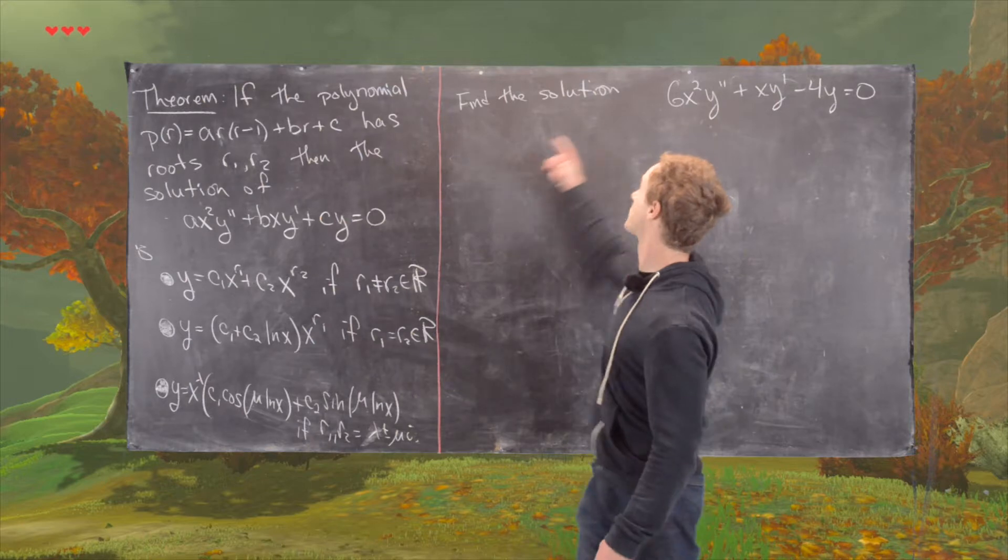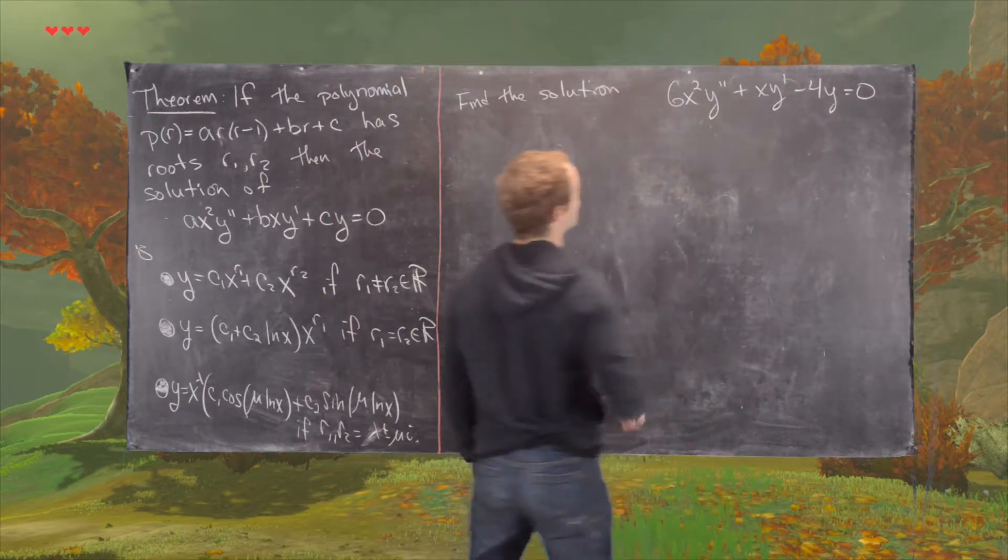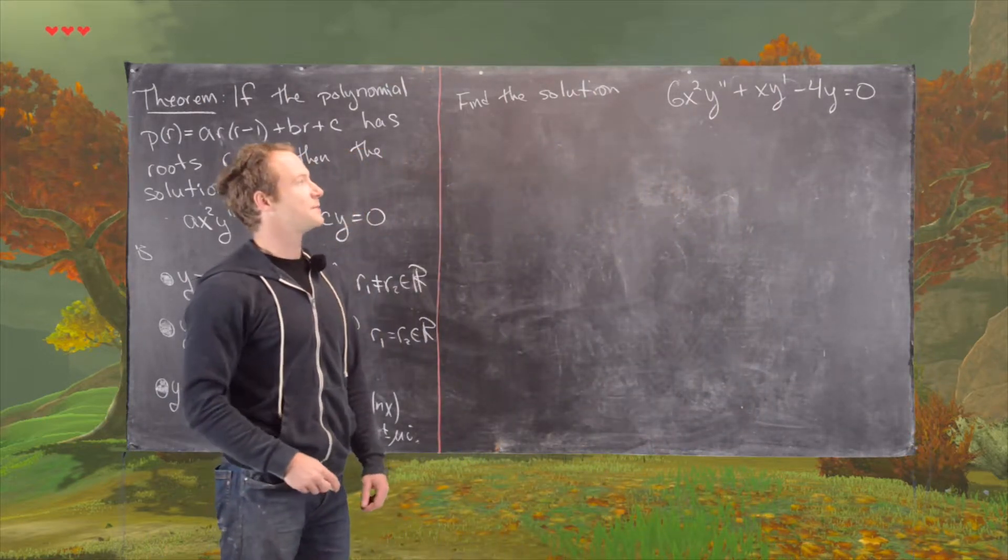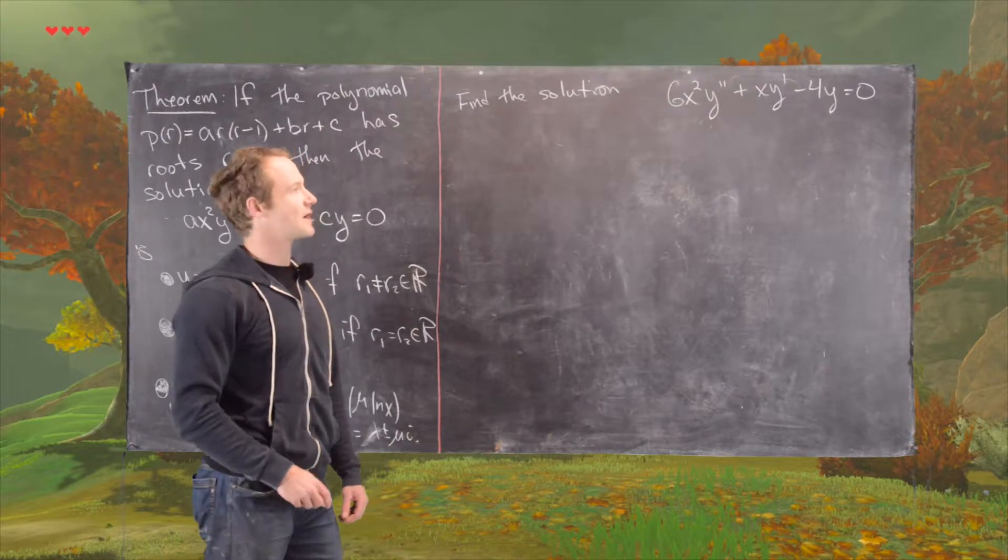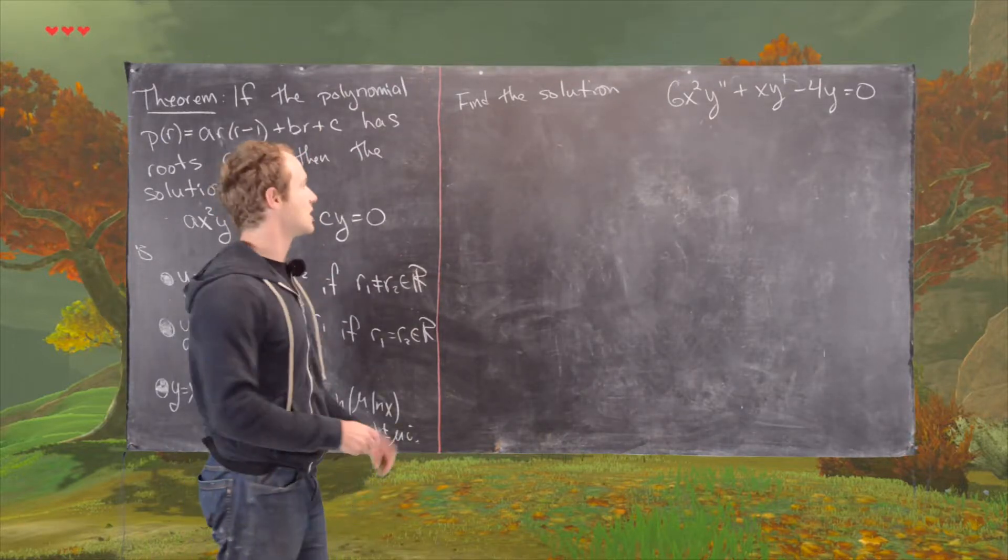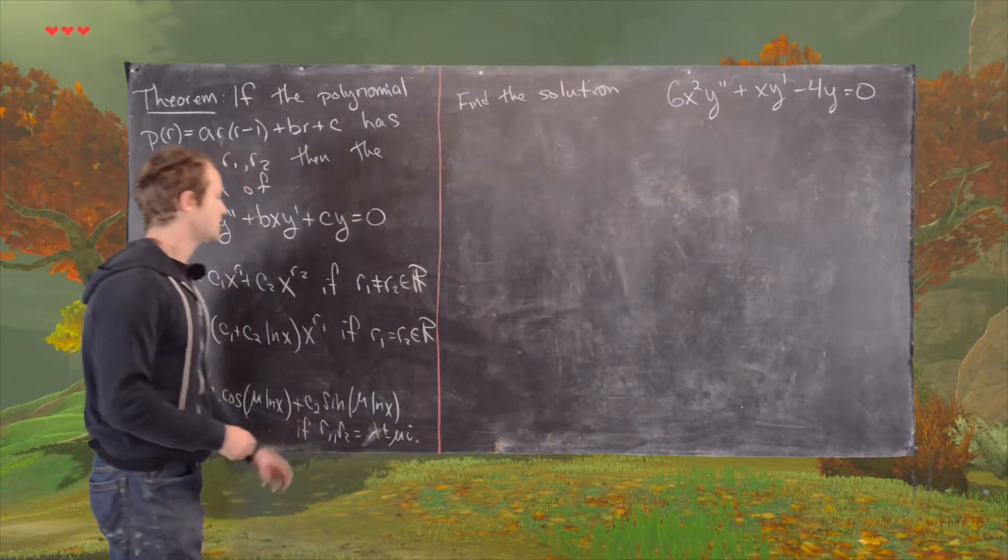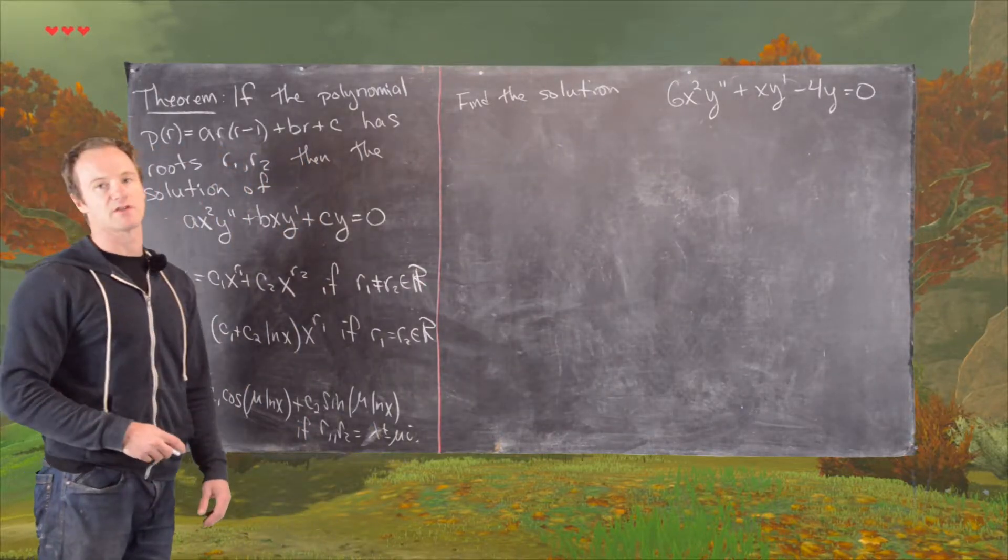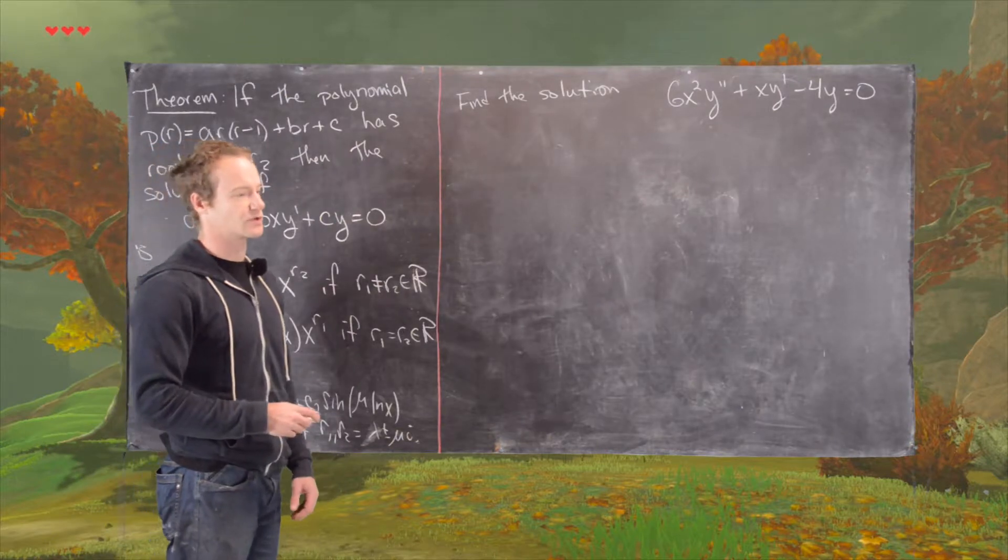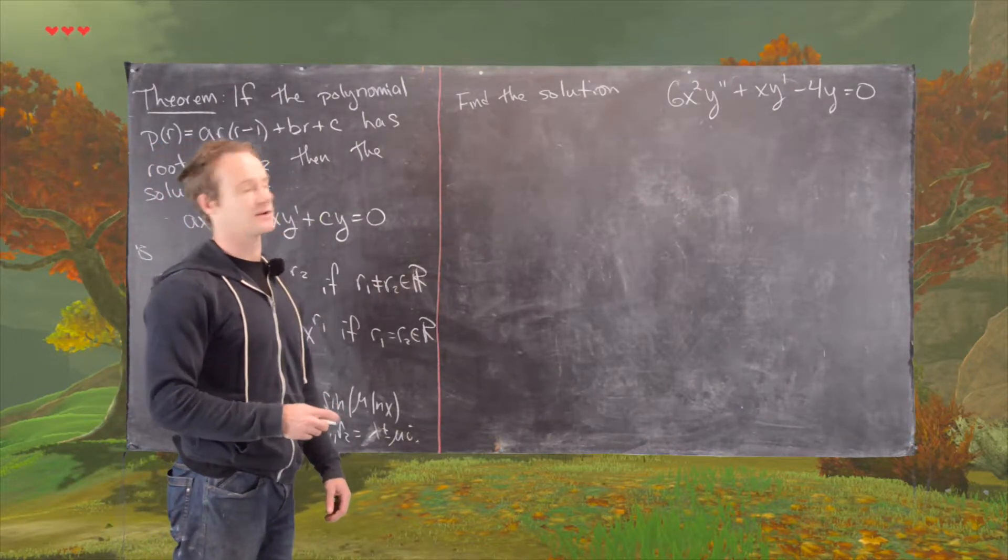So here we want to look at the following differential equation. We have 6X squared Y double prime plus XY prime minus 4Y equals zero. And so, we'll do two solutions of this. We'll do one solution that uses this theorem, and then we'll do another solution that's from scratch, which mimics the proof of this theorem.